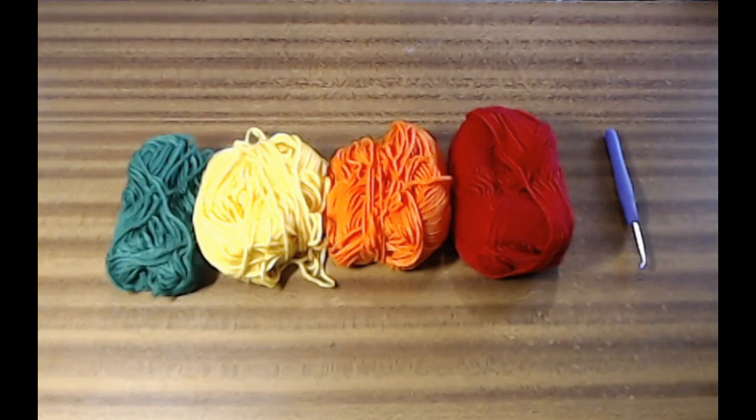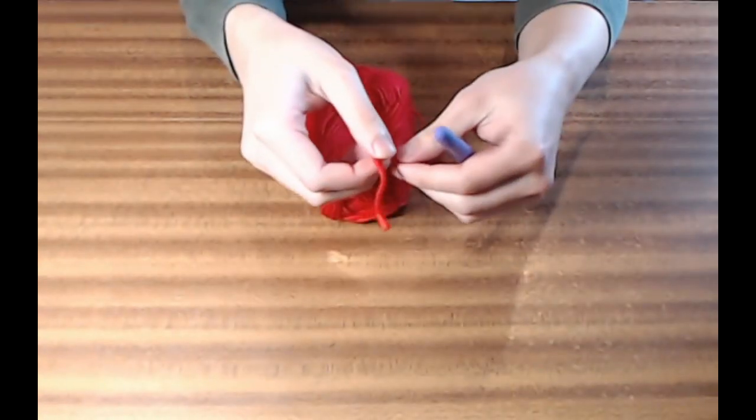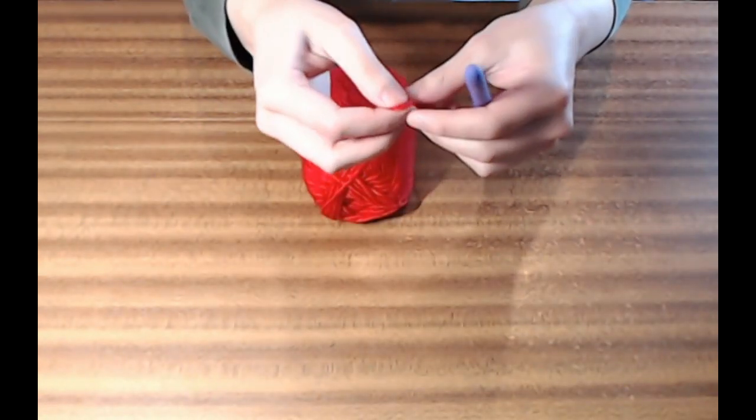To make one, you'll need a crochet hook, and ideally a reasonable amount of four different colors of yarn. I'll link the yarn that I bought below. Now I'll start by tying a slipknot, and then making a long foundation chain.